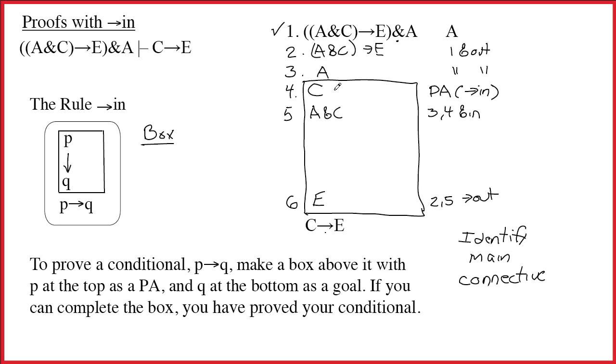The box now shows, if I pretended that C was true, then E would also have to be true. C leads to E.